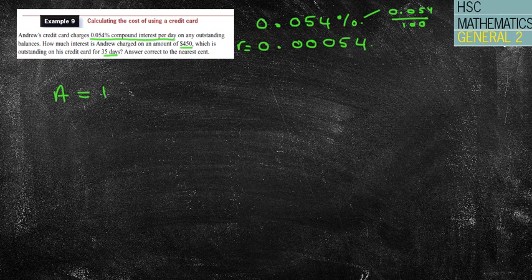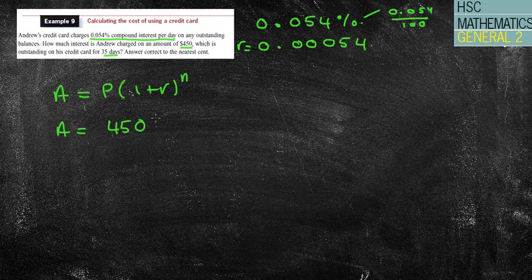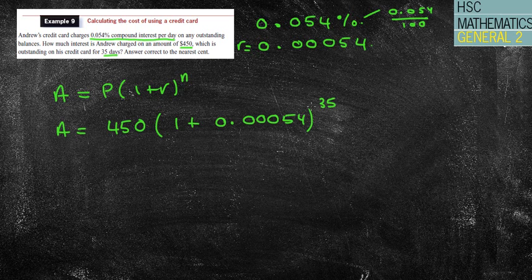How much interest does Andrew charge on an amount of $450, which is outstanding on a credit card for 35 days? So once again, we're using the compound interest formula. It's told us to do that. If it asks for simple interest, then you'd use that formula. Now we've got an outstanding amount of $450. That's what I've borrowed. We've got the 0.00054. And we're doing it for 35 days. So these have all been quite nice where we haven't actually had to calculate the number of days. Just make sure that you do know your days of the month as well, because certainly you need to know that there are 30 days in September, April, June, and November, all the rest are 31, et cetera, et cetera. So just be careful about those things. You need to know your days and months for these questions. Okay. So I've talked that into my calculator.